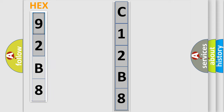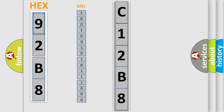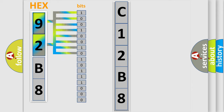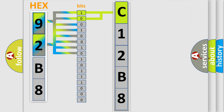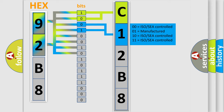The error code is split into two bytes consisting of 16 bits. One bit is the basic unit that each computer works with. The bit has two logical states: zero, low level, and one, high level. By combining the first two bits, the basic character of the error code is expressed. The next two bits again determine the second character.